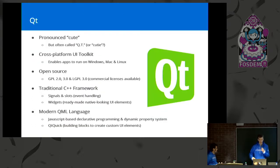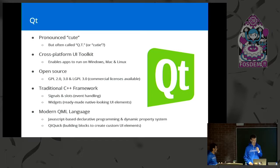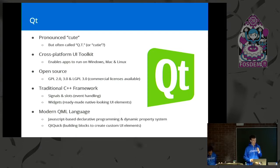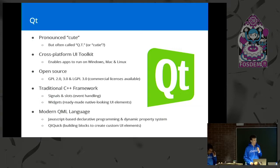And what is Qt? It's a cross-platform UI toolkit that basically enables apps to run on lots of different platforms. It's open source under various GPL licenses, and there are two parts to Qt. There's the traditional C++ framework, which basically adds event handling to C++ and widgets — UI elements that look like native UI elements you can use in your application. It also has a QML language, which is sort of a JavaScript-based programming language, and rather than giving you pre-made widgets like the C++ framework, QML gives you the building blocks to create your own custom widgets and UI elements.